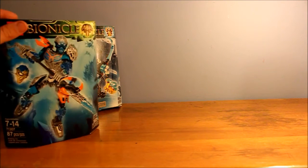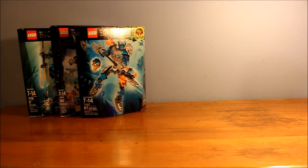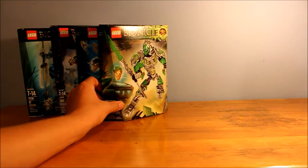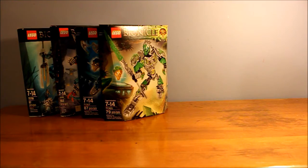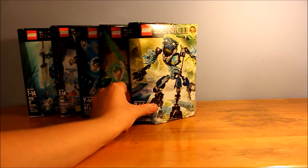Gali, Uniter of Water. Now we're into the 2016 boxes. Lewa, Uniter of Jungle. Storm Beast, from 2016 as well.